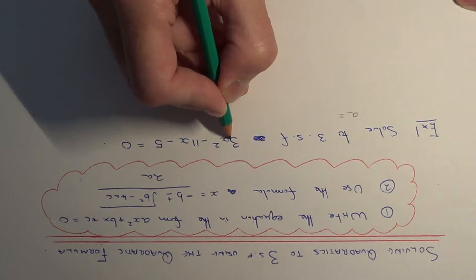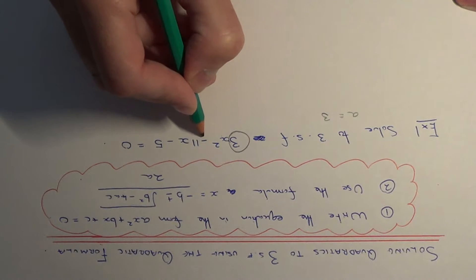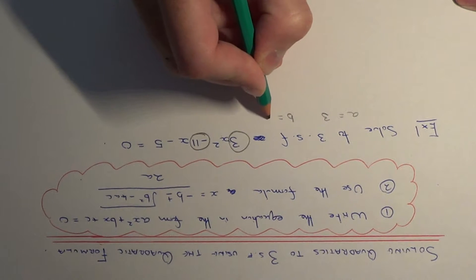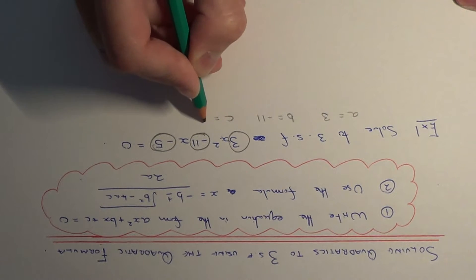a is equal to 3 because this is the number before x squared. b is equal to minus 11 because this is the number before x. And c is the number at the end, which is minus 5.